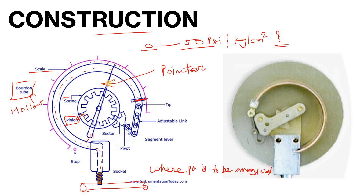The pinion gear is attached to another gear — the sector gear. When pressure is applied, the sector gear moves and drives the pinion gear. There is also a segment lever connected at a pivot point, which makes the mechanism fixed. The segment lever connects to the tip of the tube via an adjustable link, which plays a very significant role — without it the mechanism could be damaged, so this adjustable link is very important.